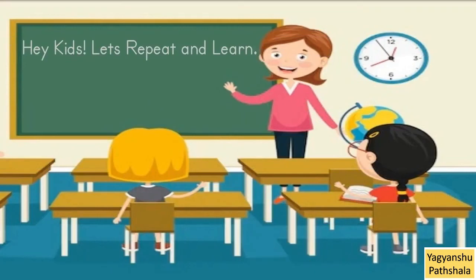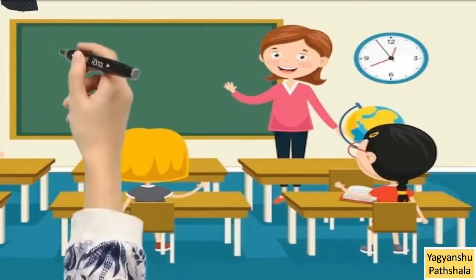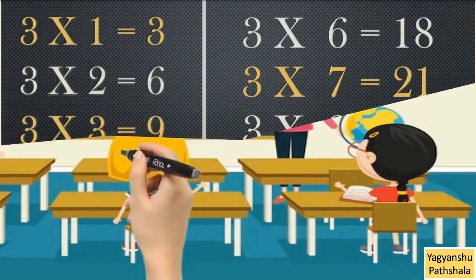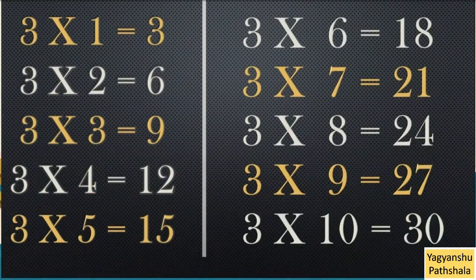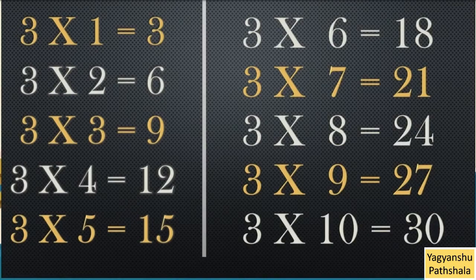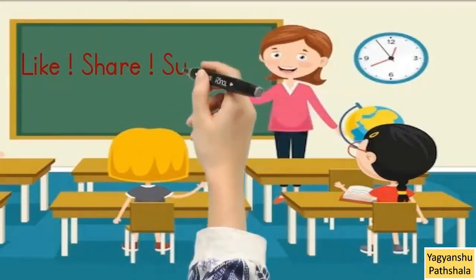Hey kids, let's repeat and learn. 3 into 1 is 3. 3 into 2 is 6. 3 into 3 is 9. 3 into 4 is 12. 3 into 5 is 15. 3 into 6 is 18. 3 into 7 is 21. 3 into 8 is 24. 3 into 9 is 27. 3 into 10 is 30.